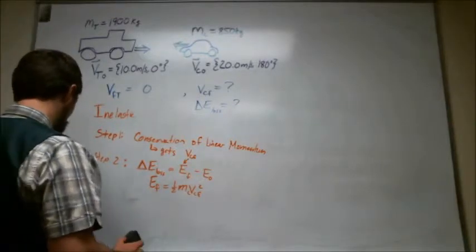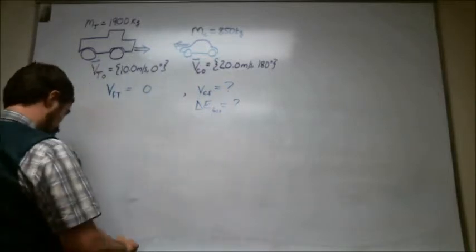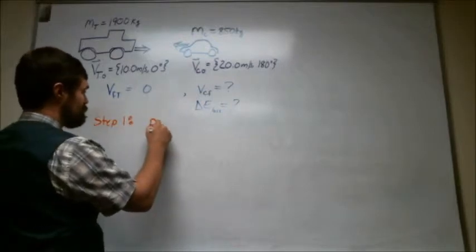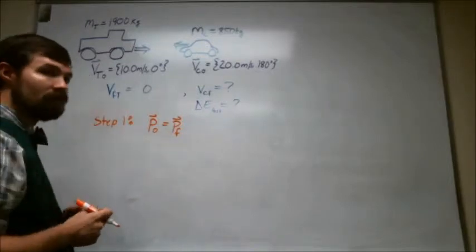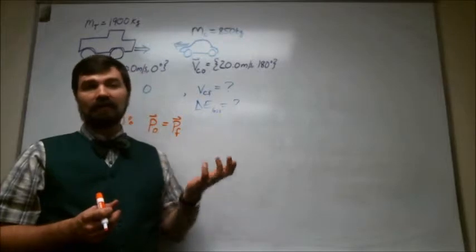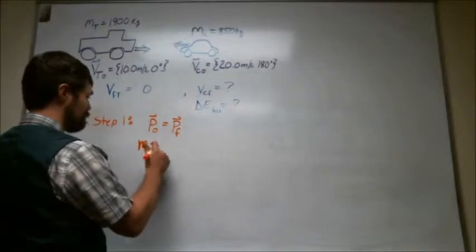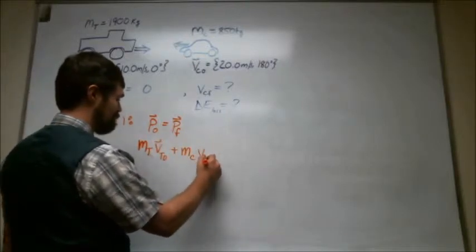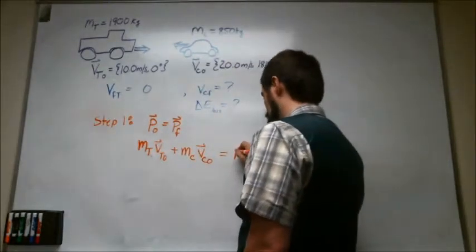So let's start off with step one, which is conservation of momentum. So that says that the initial momentum and the final momentum have to be equal. And the initial momentum is going to be the mass of the first car times its velocity plus the mass of the truck times its velocity. So this is m truck v truck zero plus m car v car zero.